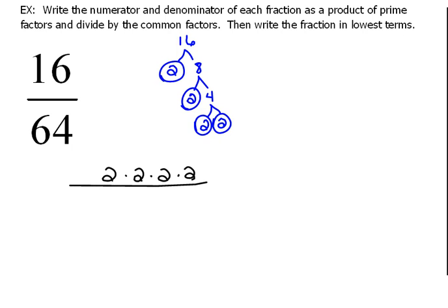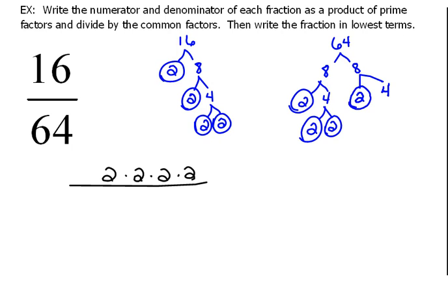All right, now let's do the prime factorization of 64. So let's see, 64 I know is 8 times 8, and 8 is 2 times 4. 4 is 2 times 2. Okay, so we're done with that section. Now back up here at this 8. 8 would be 2 times 4, and 4 is 2 times 2. So if I were going to write out 64, I'd have to write out 6 of these 2's.